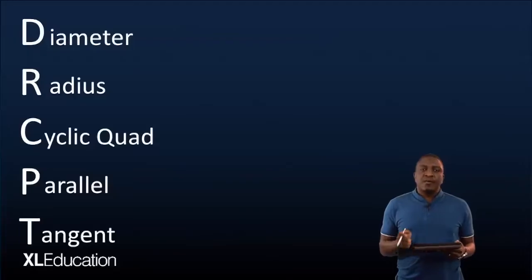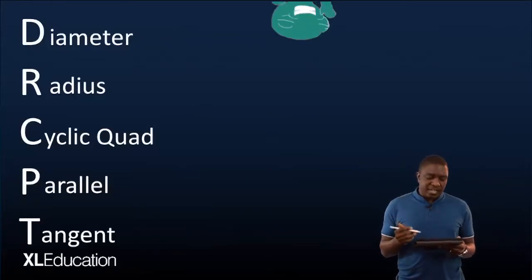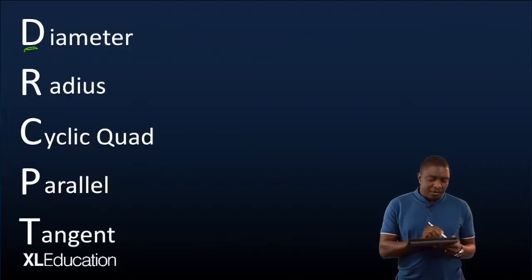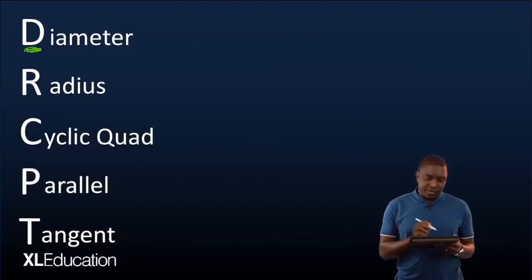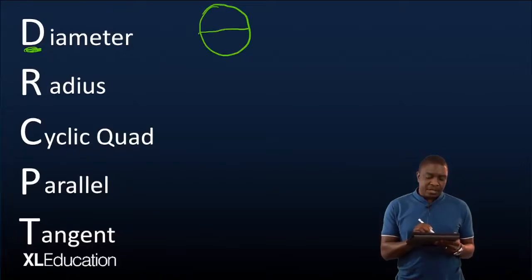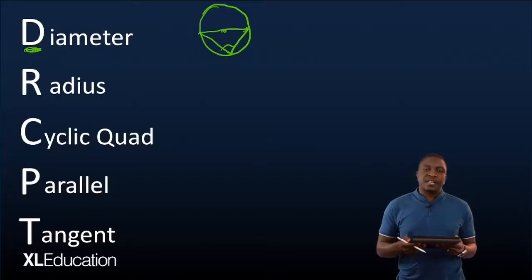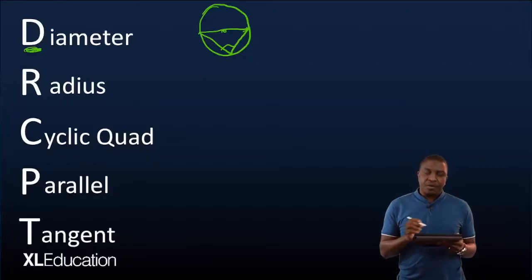So when a question comes, look at your diagram and look out for the diameter. When you identify a diameter, you need to think about the relevant theorem and all the other theorems that are connected to the diameter. When you are done with your diameters, look for any radius.